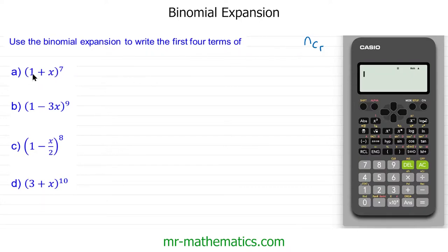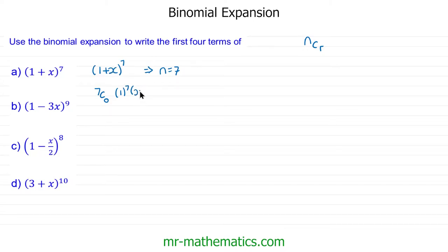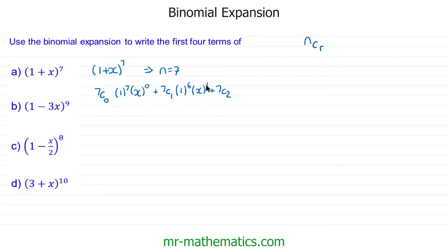Looking at question a, we're going to expand (1 + x) to the power of 7. For this question the value of n will be 7 and the r term will change as we progress through the sequence. The first term in our sequence will be 7 choice 0, of 1 to the power of 7, multiplied by x to the power of 0. Our second term will be 7 choice 1 of 1 to the power of 6 multiplied by x to the power of 1. As we progress, we'll have 7 choice 2 for our third term, and these two powers always add up to the n value.